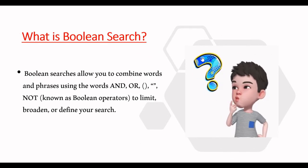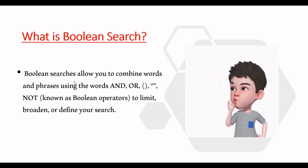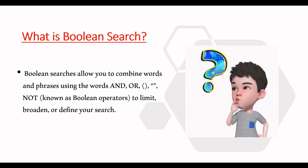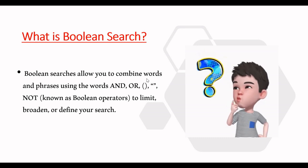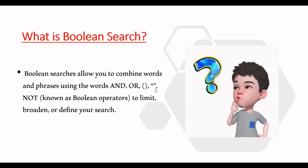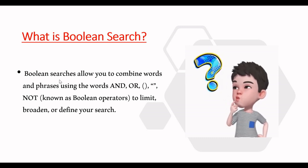We will see a live demo on naukri.com, but first let's look at the definition of boolean searching — we should know what exactly boolean search is. Boolean searches allow you to combine words and phrases using the words AND, OR, NOT, brackets, and quotation marks — known as boolean operators.